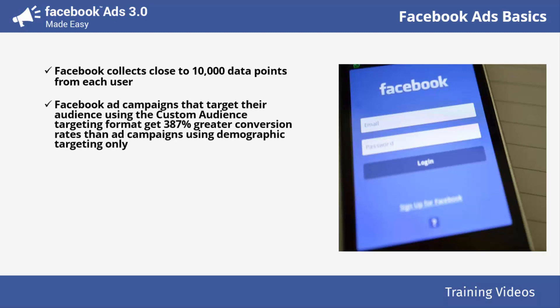Facebook ad campaigns that target their audience using the custom audience targeting format get 387% greater conversion rates than ad campaigns using demographic targeting only. That means that using Facebook ads' powerful targeting options, you will get conversion rates almost 400% higher than on any other advertising platform.